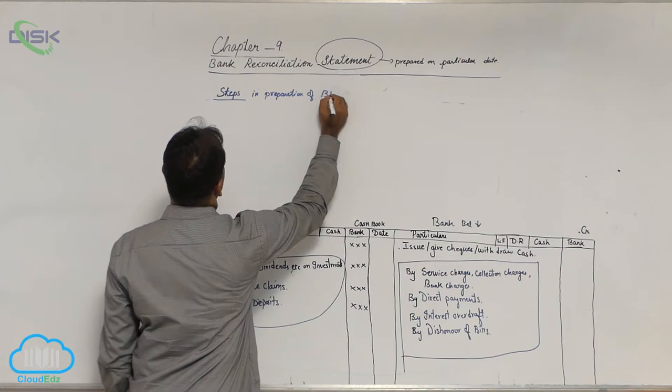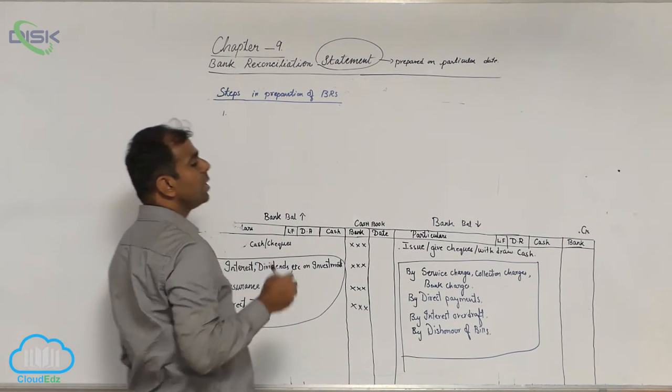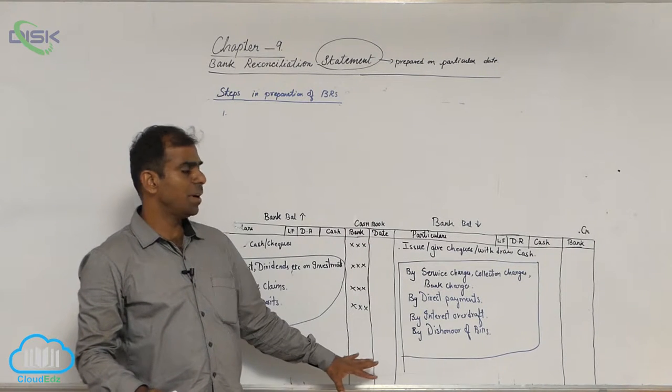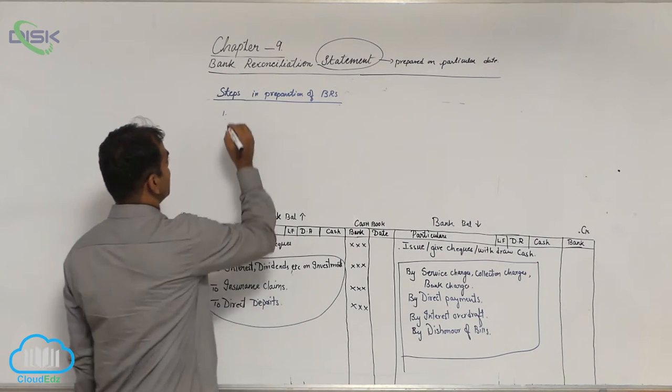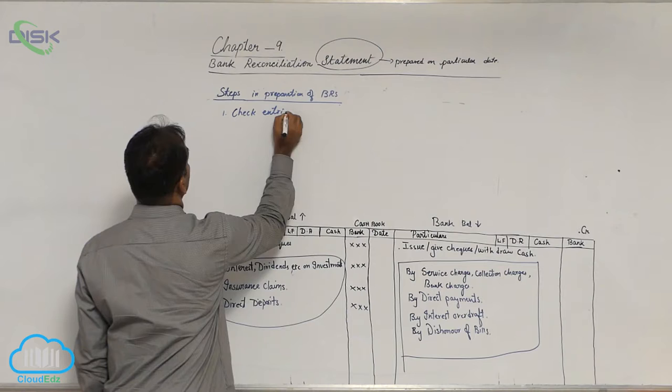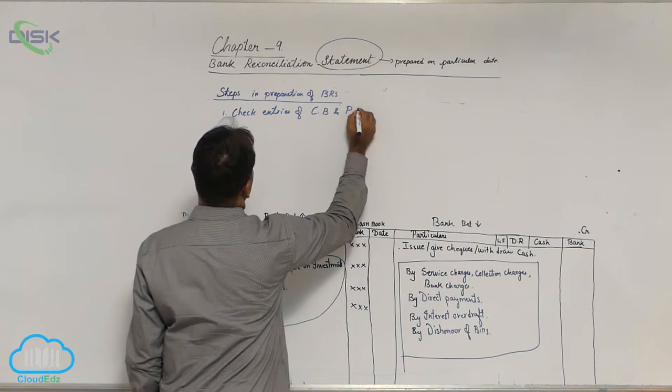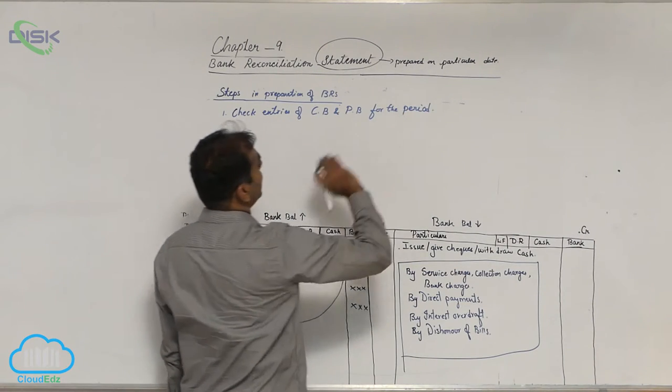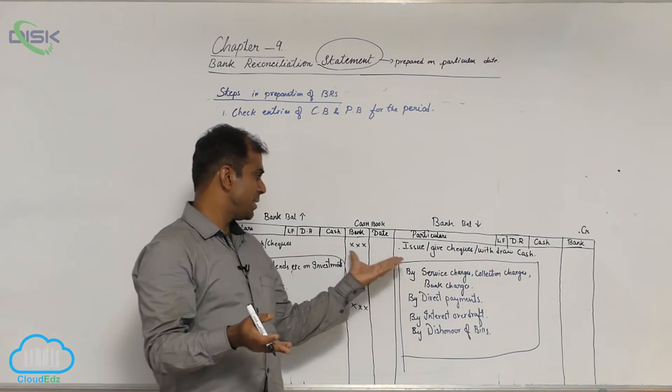Now first step, you have to ensure that you check the entries of your cashbook and check the entries of your passbook. That is, check entries of cashbook and passbook for the period by comparing. But you compare the entries. Suppose, let us say you take for the month of January.